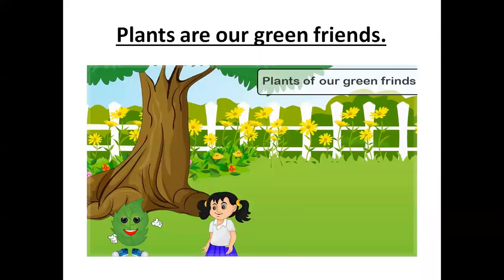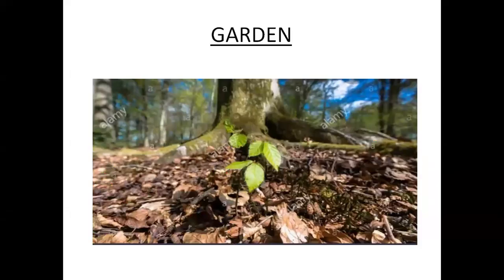We all know that plants are our green friends. They are very helpful to us. When we walk in a garden, we observe small saplings growing under the tree. One question always arises in our mind: from where do these saplings come? They are actually the baby plants of a tree, and the process of production of a baby plant from a parent plant is known as reproduction.